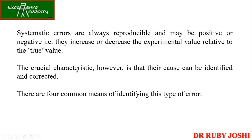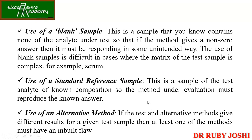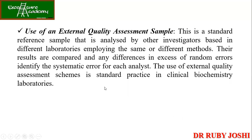The crucial characteristic of systematic errors is that their cause can be identified and corrected. There are four common means of identification: use of a blank sample, so you can compare your test sample against standard values; use of a standard sample; use of an alternative method — if the test and alternative methods give different results, at least one must have an inherent flaw, allowing you to identify and minimize it.